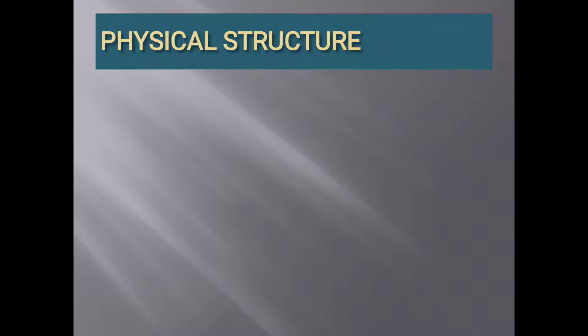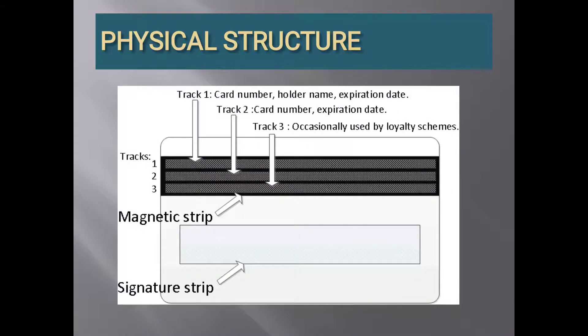The physical structure of the magnetic strip is shown in the picture. The horizontal black line at the top of the card is magnetic strip. It has three tracks. Track 1 contains card number, holder number, and expiration date. Track 2 contains card number and expiration date. Track 3 contains the purpose of card, as it is occasionally used by loyalty schemes. Below the magnetic strip is a signature strip.